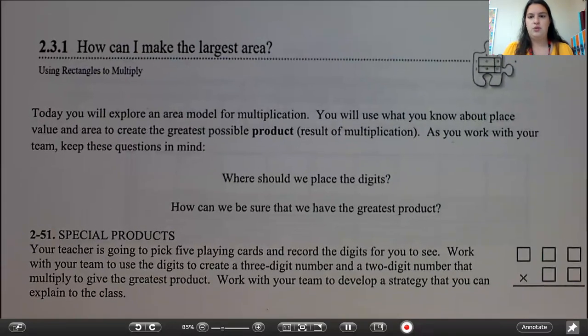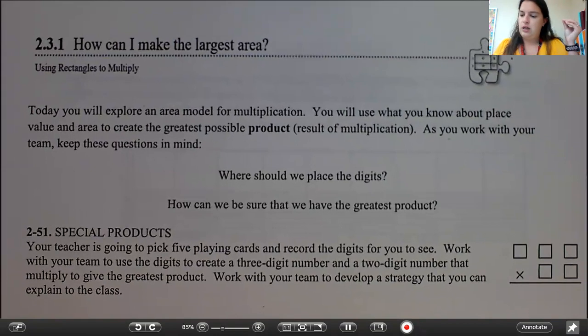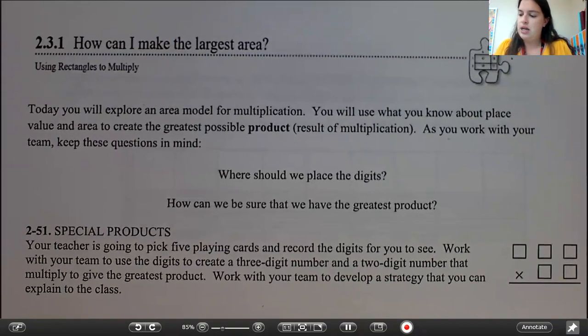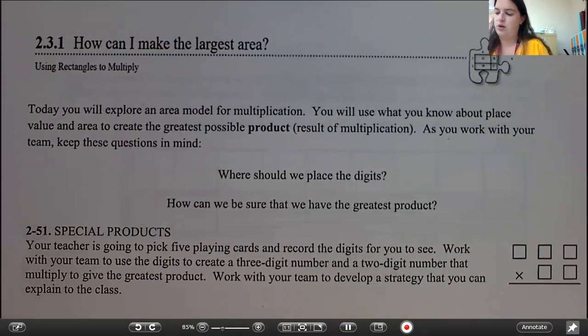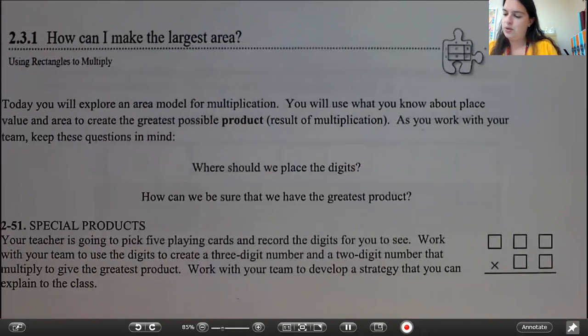Okay, hi everyone. I'm back with your 2.3.1 video, which is titled How Can I Make the Largest Area Using Rectangles to Multiply. If you want to follow along as I read your introduction, today you will explore an area model for multiplication. You will use what you know about place value and area to create the greatest possible product, result of multiplication. As you work with your team, keep these questions in mind: where would we place the digits? How can we be sure that we have the greatest product?